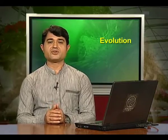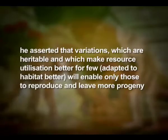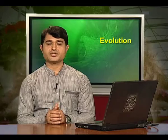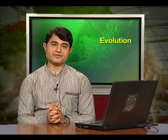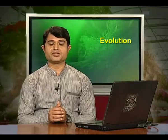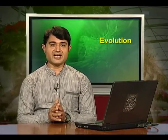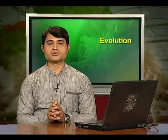The novelty and brilliant insight of Darwin was this: he asserted that variations which are inherited and which make resource utilization better for a few — meaning better adaptation to habitat — will enable only those individuals to reproduce and leave more progeny. Hence, over many generations, survivors will leave more progeny and there would be a change in population characteristics, and hence new forms appear to arise.